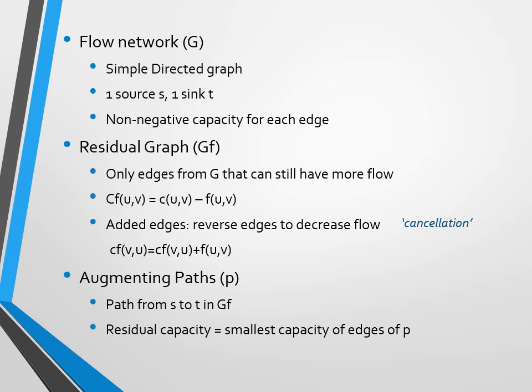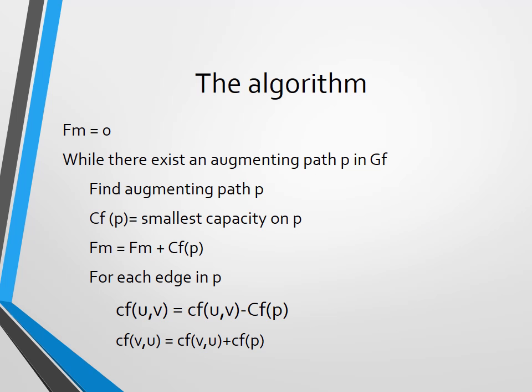So all put together, we will make the residual graph, search augmenting paths in it, for each of them find the residual capacity and add it to the maximum flow. So while there still exists an augmenting path P in the residual graph, find it, find the residual capacity and add it to the maximum flow. Then, for each edge in the path, decrease the capacity by the residual capacity if it's one of the original edges. If it's one of the return edges, then increase it by the residual capacity.